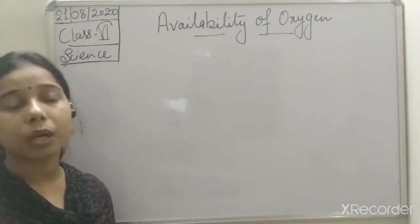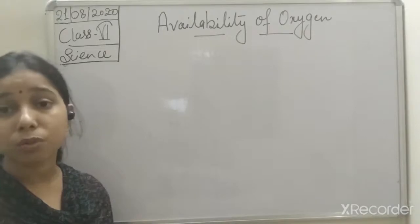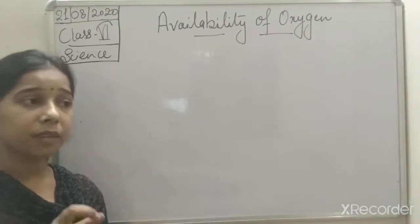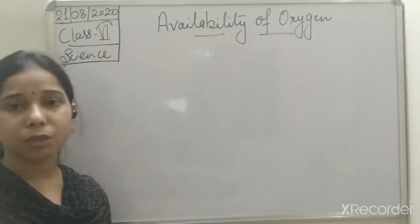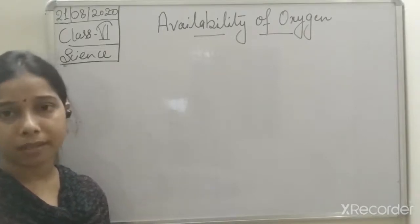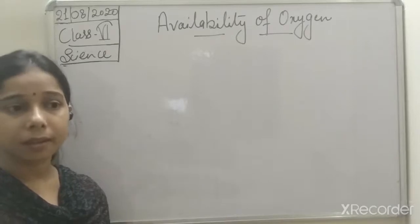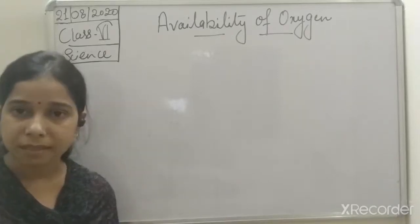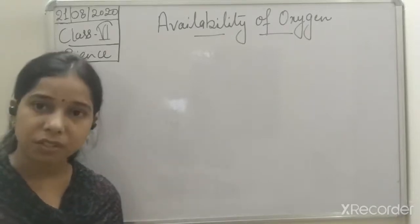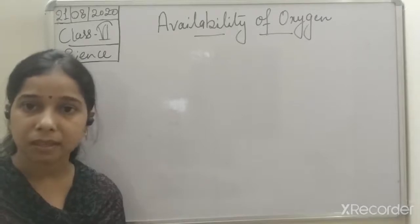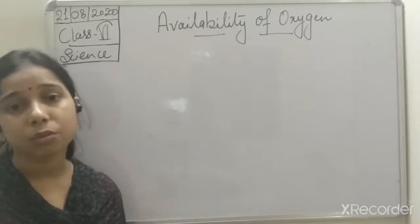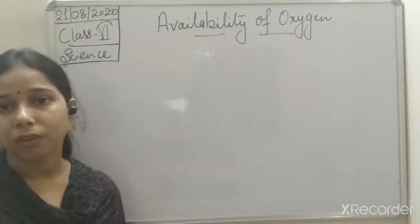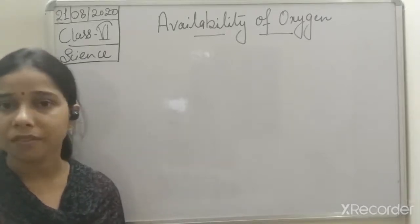If we talk about the earthworm, the earthworm lives inside the soil. In between the soil particles, the air which is present there — the oxygen present in it — is used by the earthworm for the process of respiration.